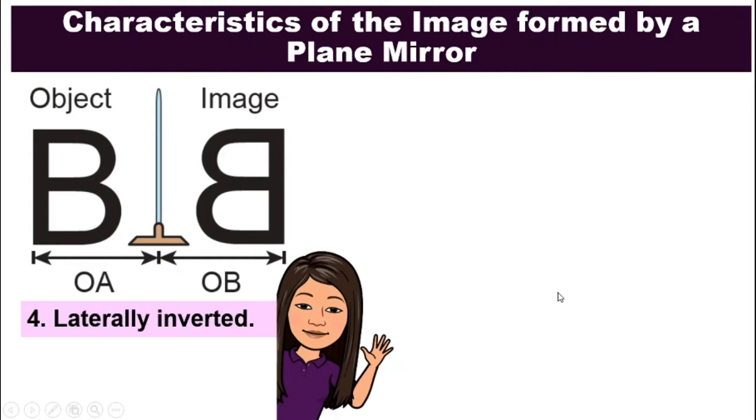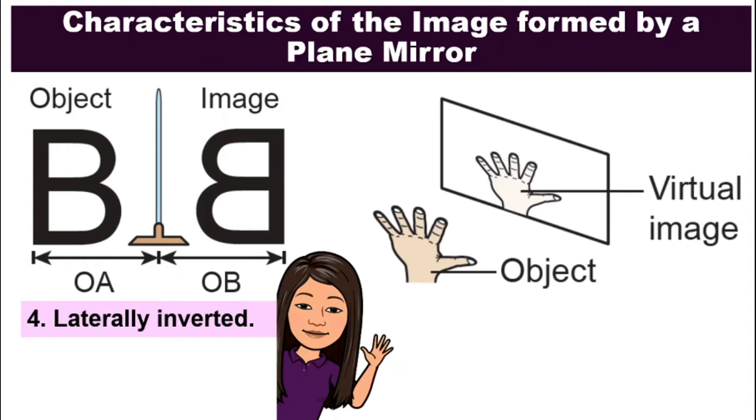Number four, the image that is formed by plane mirror, they are laterally inverted. Even though they are upright, the top and the bottom is the same, but they are inverted sideways. Their left and right are inverted.